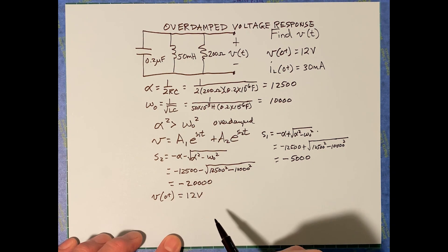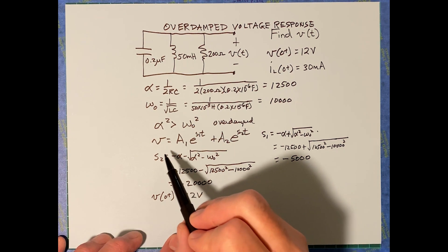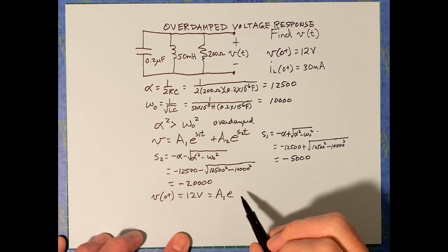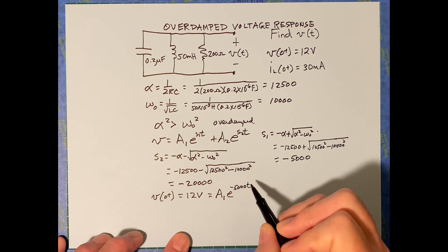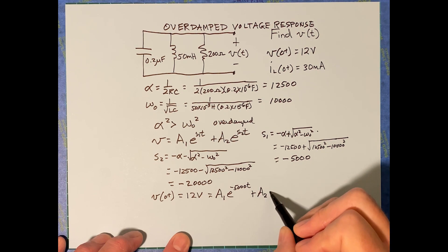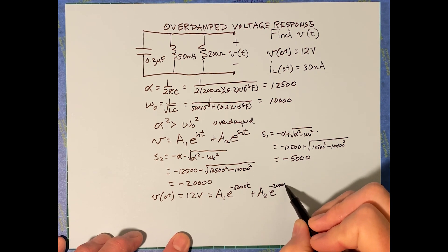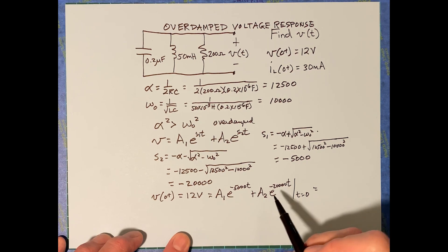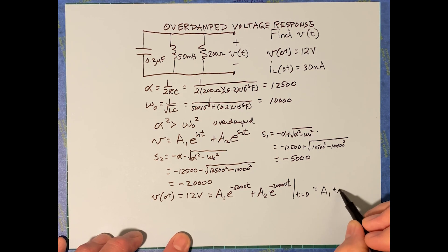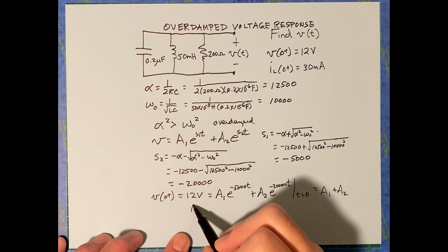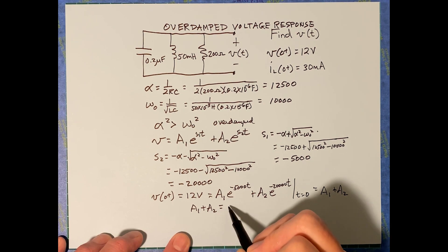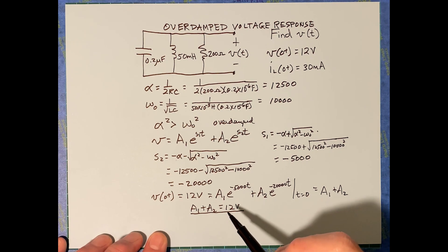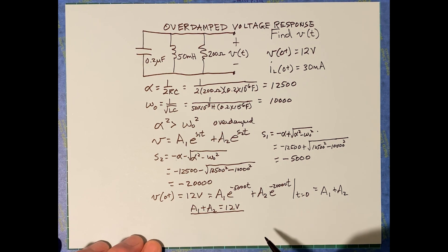We're told the voltage at zero-plus equals 12 volts. So our solution is A1·e to the negative 5000t plus A2·e to the negative 20,000t. Evaluating that at t equals zero, the exponentials become one, leaving A1 plus A2 equals 12 volts. That is our first equation to find A1 and A2.